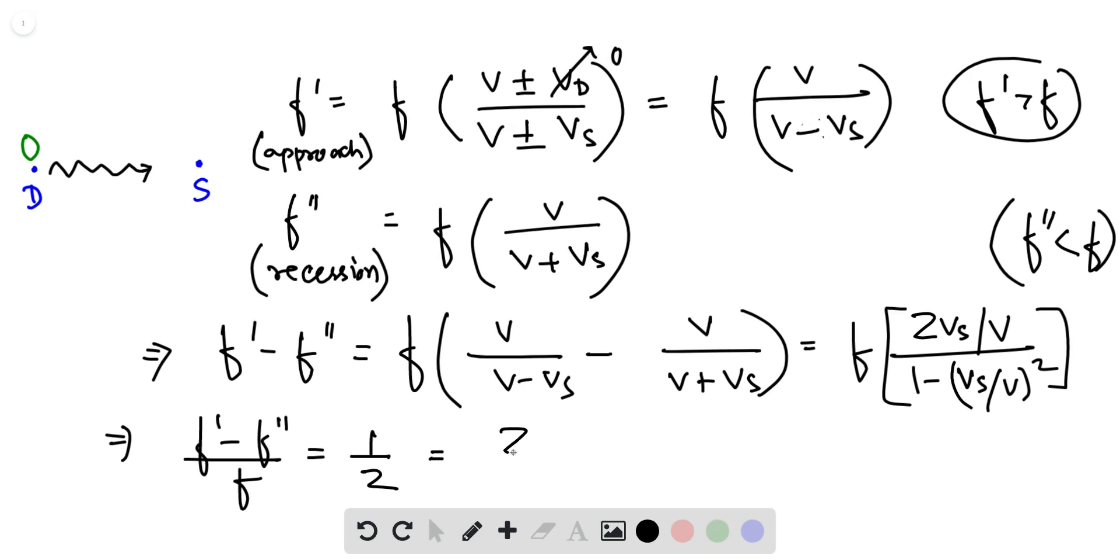This is equal to V_s over V over 1 minus V_s over V squared.